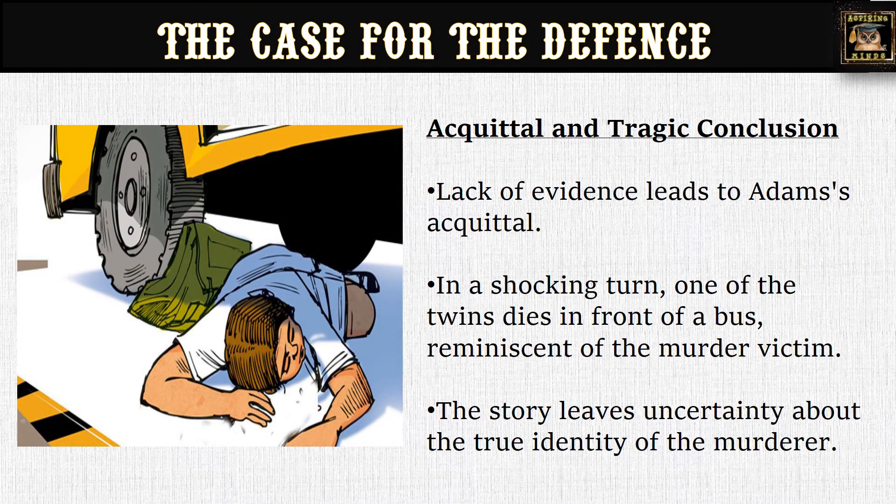Due to lack of evidence, Adams is found not guilty of having committed the murder. However, in a shocking turn of events, one of the twins dies after being struck by a bus, and that person looks similar to the murder victim. The story leaves uncertainty about the true identity of the murderer, as the twin's death mirrors the manner of the original crime — giving the story a tragic ending.